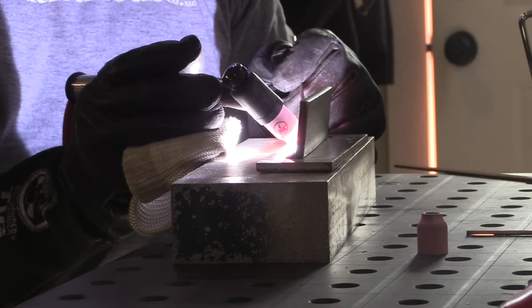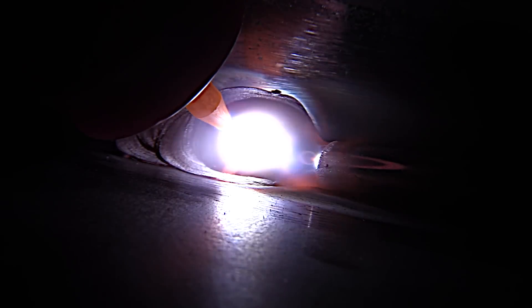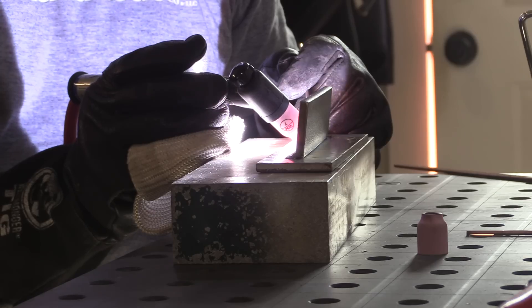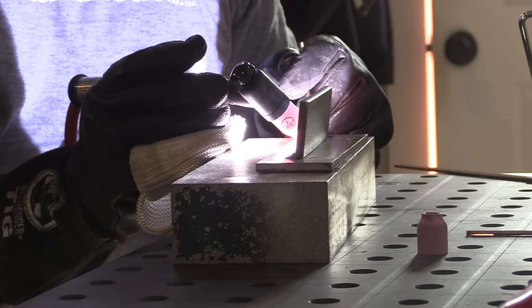I'm using a torch switch as opposed to a foot pedal here because I really don't need the amperage control for something like this. I know about what amperage I want. I know I'm not going to need to change it during the middle of the weld. I have the up slope and the down slope set to about two seconds and that's all it takes to get started and then to taper off at the very end of the weld.